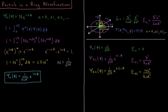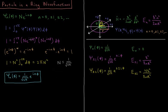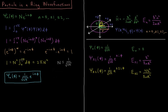So we have e to the minus i n phi times e to the i n phi. Whenever you have e to the x times e to the minus x, that equals e to the x minus x, or e to the zero, which equals 1. So everything inside the integral is just 1, leaving only d phi. We can factor out the normalization constant since it is constant with respect to phi. Integrating d phi from 0 to 2 pi gives phi evaluated at 2 pi minus phi evaluated at 0, which equals 2 pi.